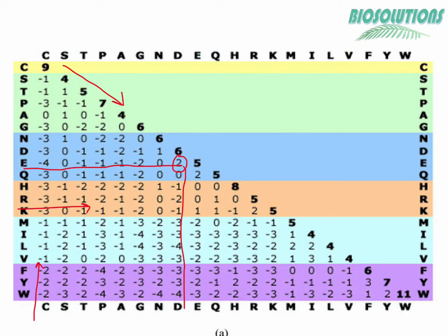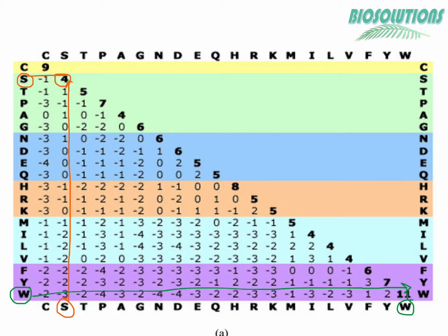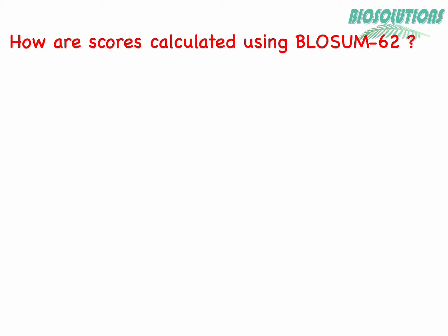The numbers at the diagonal represent values given to identity matches. For example, if both sequences have proline (P), the score will be positive 7. Even the values given to identical amino acids are not the same. A serine-to-serine match (S) receives a score of 4, whereas a tryptophan-to-tryptophan match (W) receives 11. This is because scores were calculated based on the natural frequencies of amino acid occurrence. If a residue is common, it gets less weightage; a rarely found residue like tryptophan gets higher weightage and score.